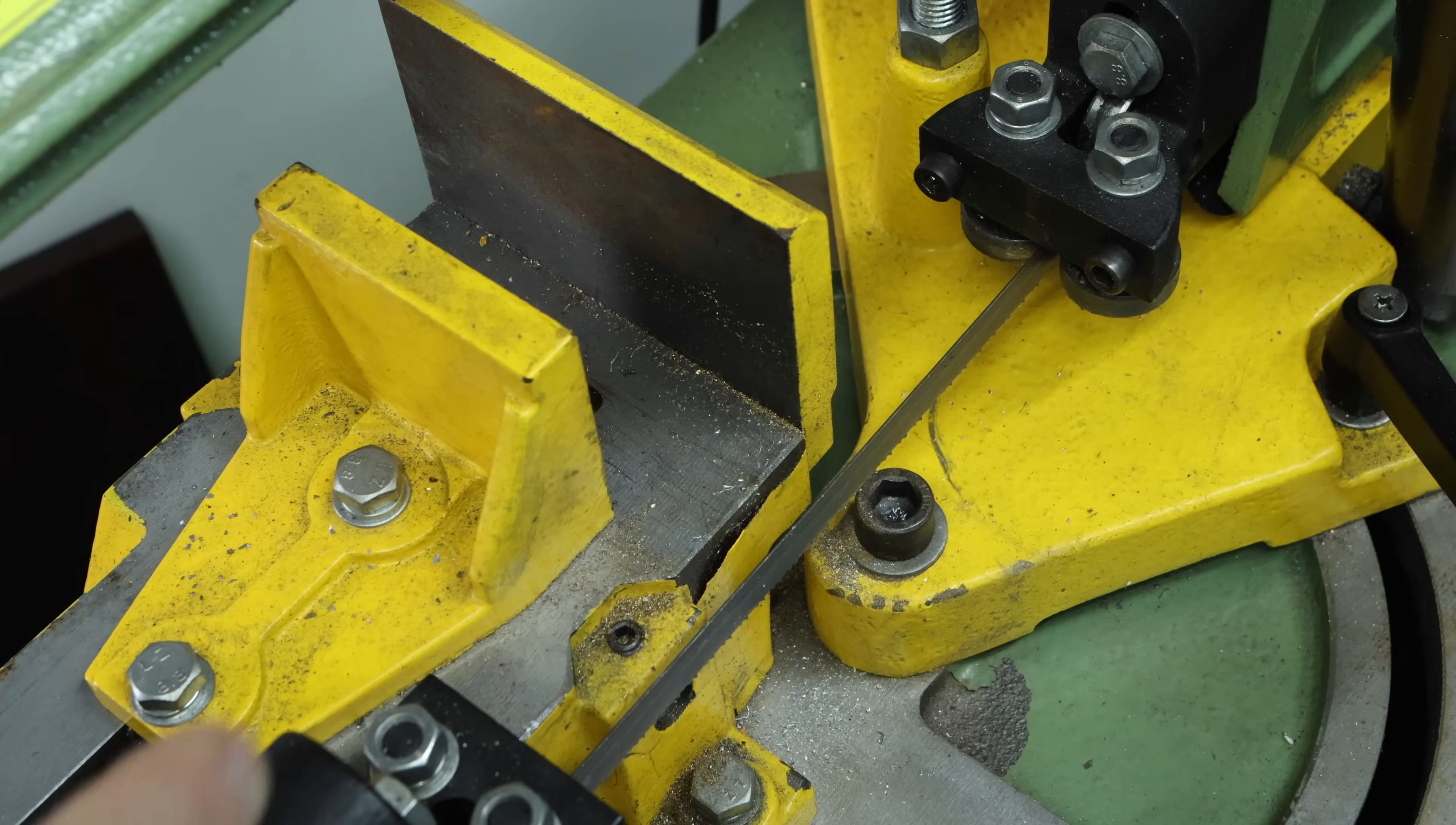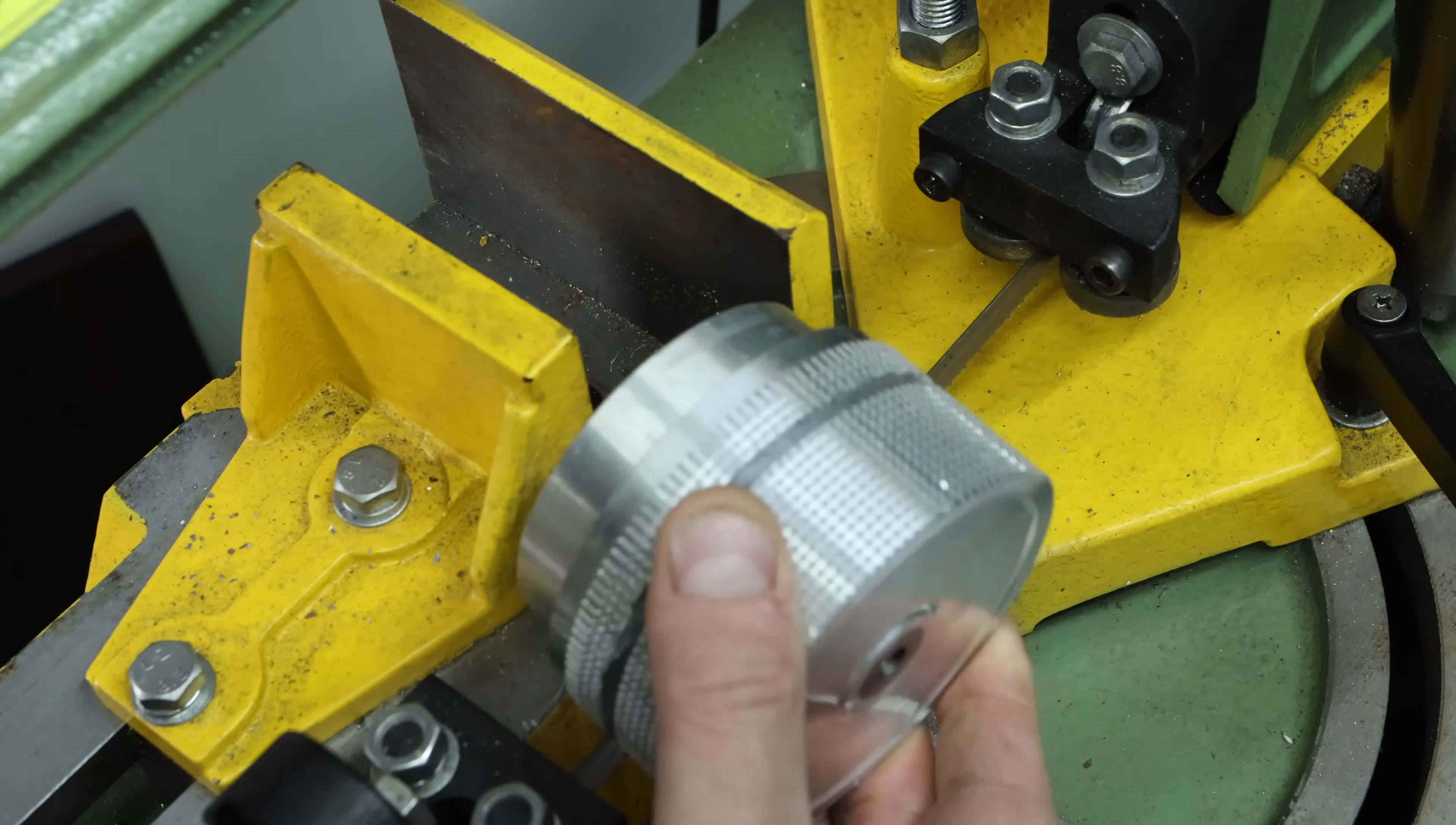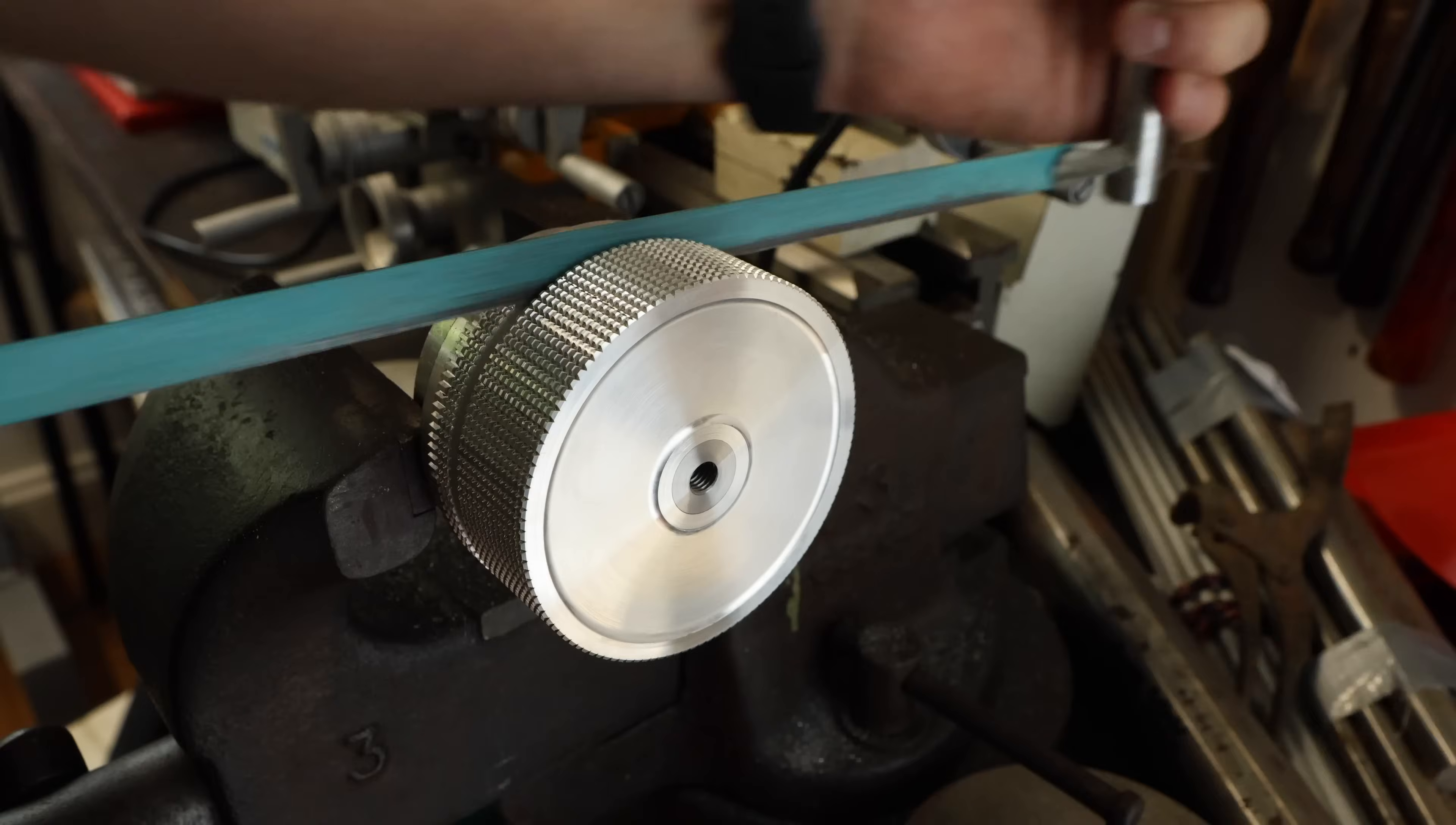Now I fell at the first hurdle with the bandsaw. As you can see here I can't actually fit the part in the vice because the jaws are different widths - there's just not enough material to grab hold of. So that is a massive fail on the forward planning front. Over to plan B.